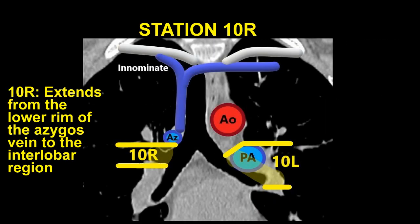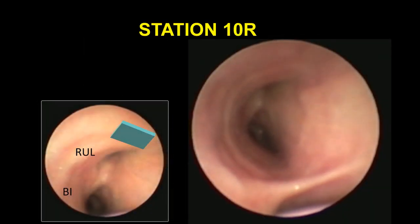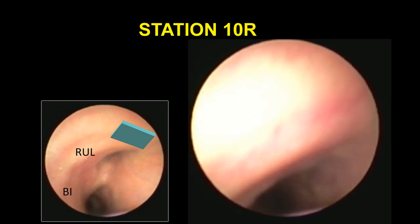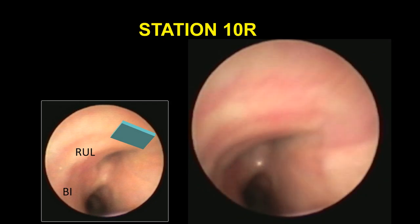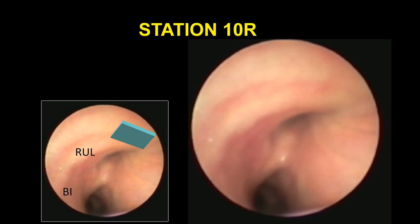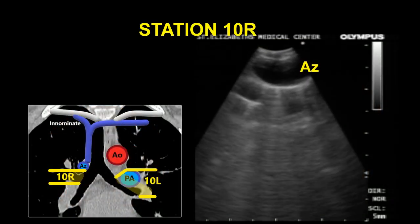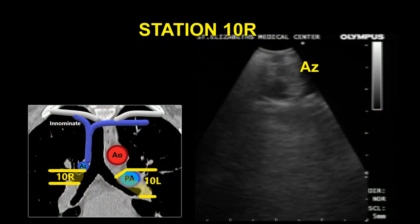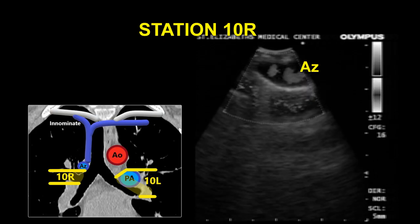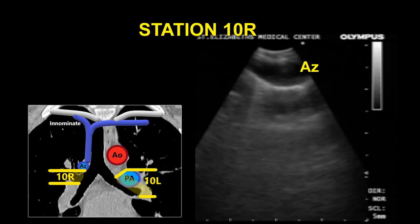Station 10R, the right hilar node, extends from the lower rim of the azygous vein to the interlobar region between the right upper lobe and bronchus intermedius. To visualize this lymph node station, the EBUS scope can be advanced from the main carina to the origin of the right upper lobe bronchus with the probe oriented towards the anterior and right lateral walls. In this view, the scope is oriented laterally so that the node is located distal to the azygous vein, which is seen at the 3 o'clock position proximally.